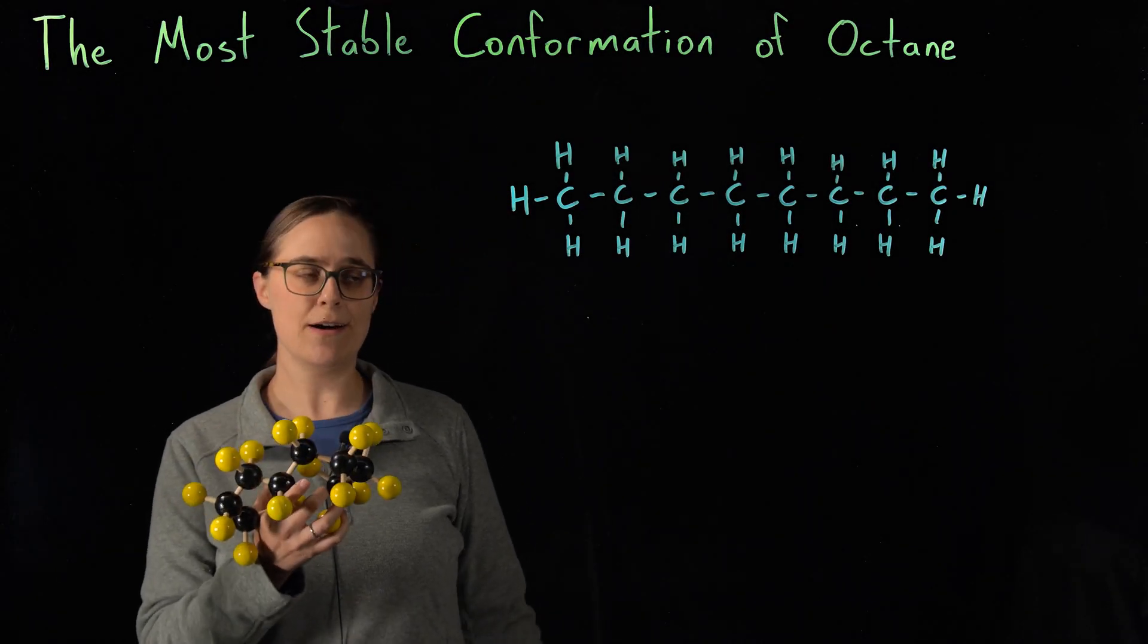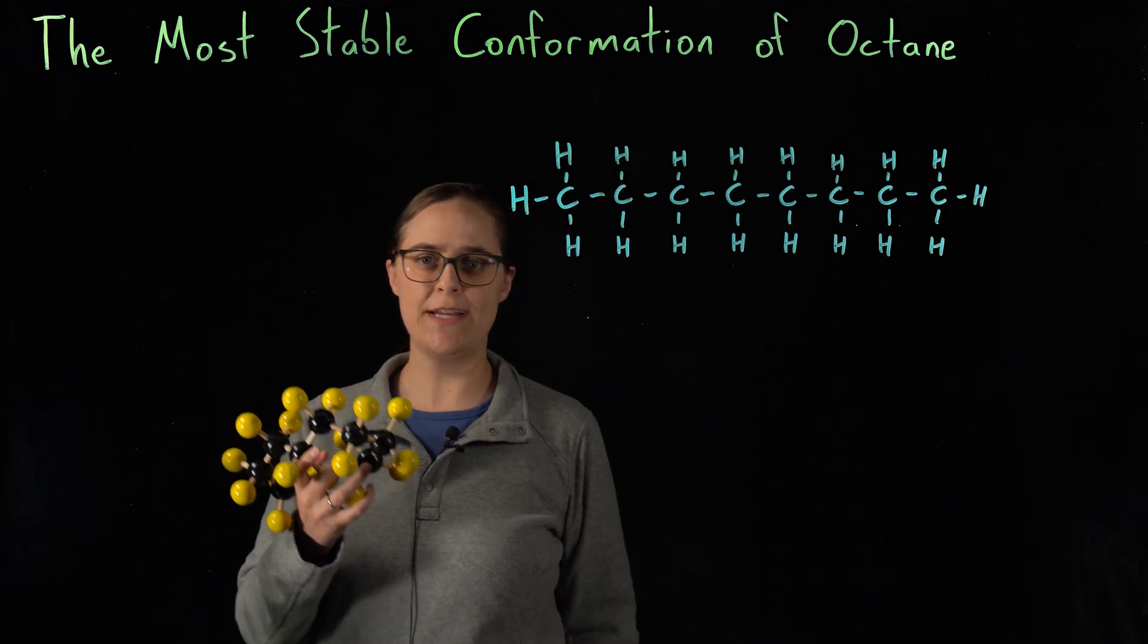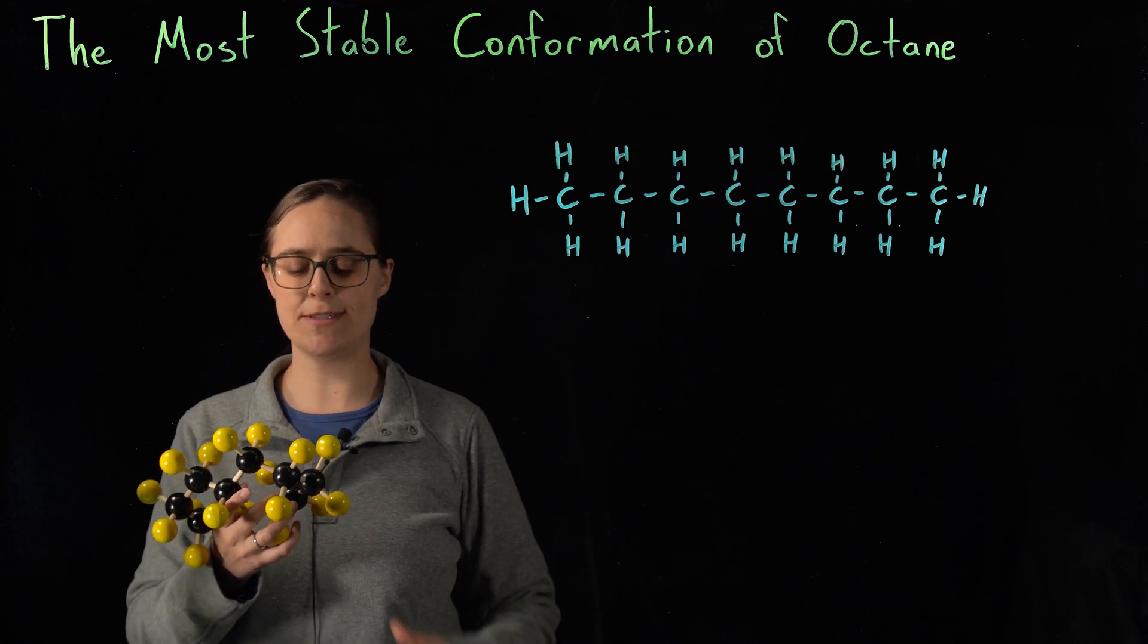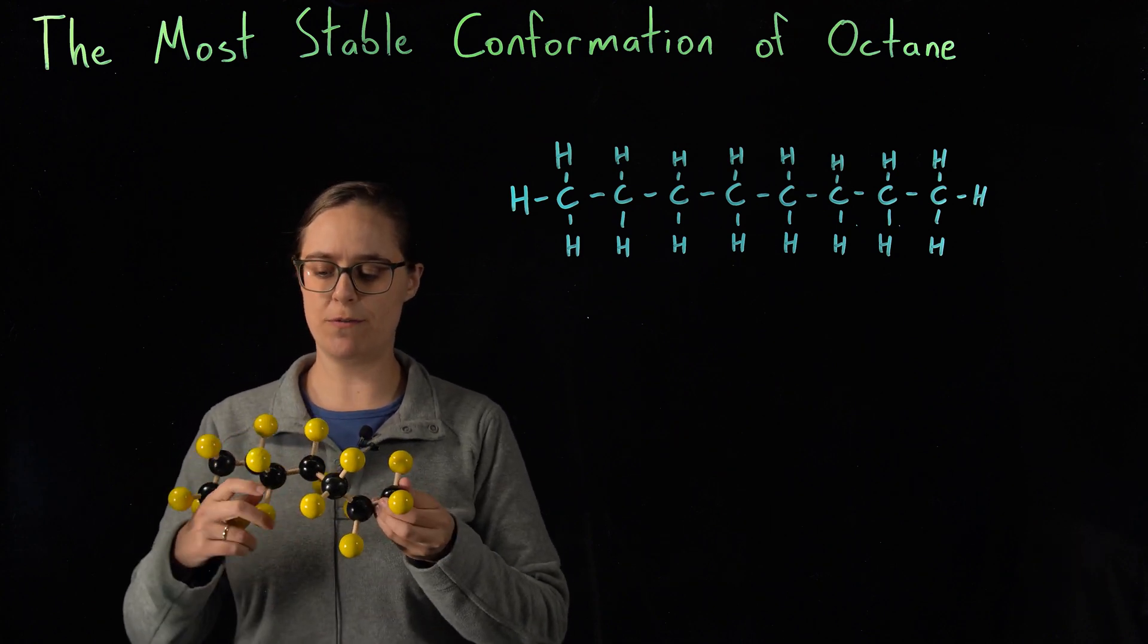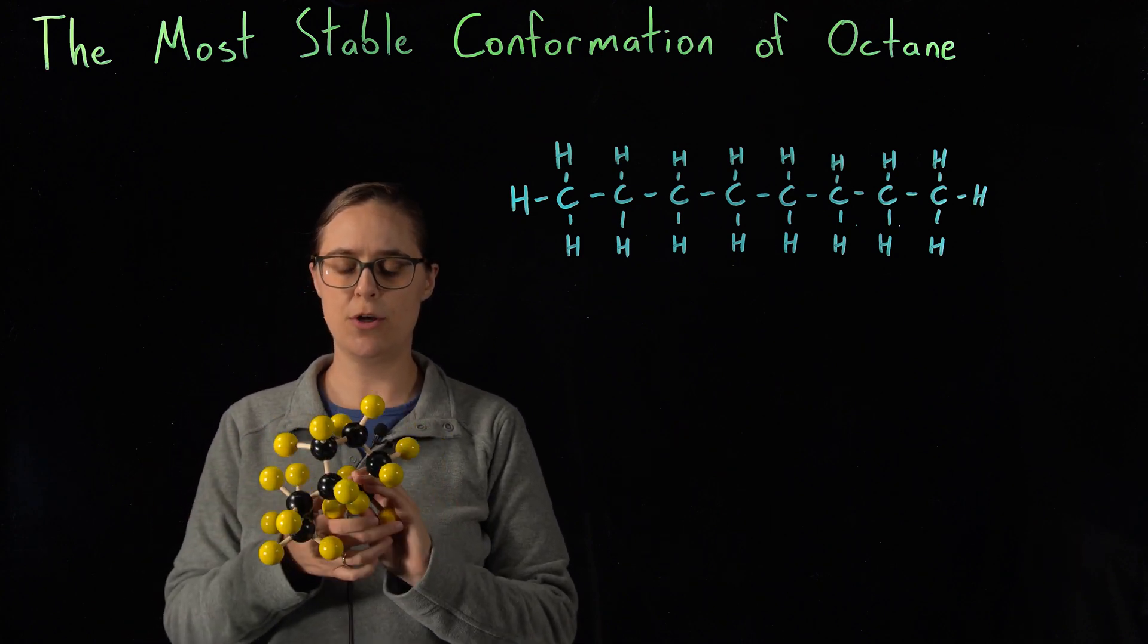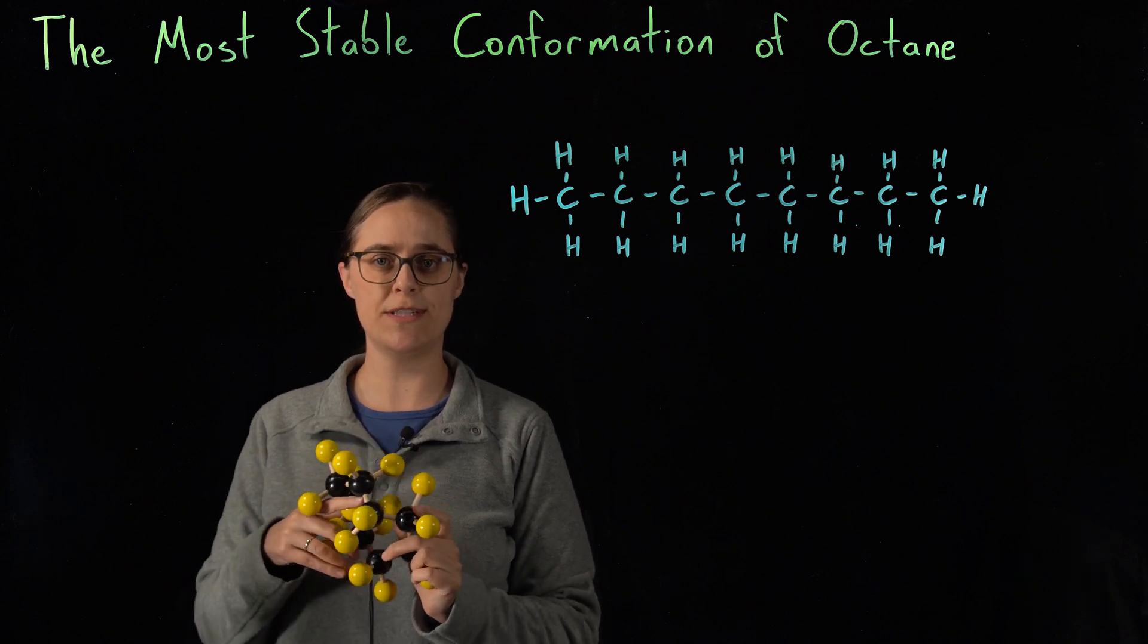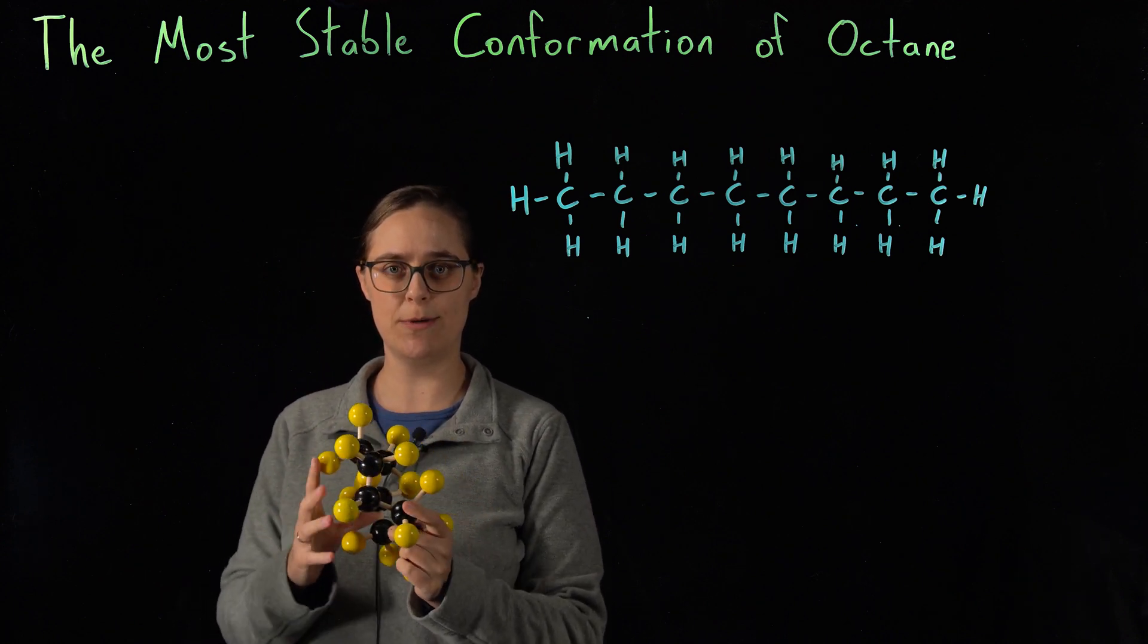I have a molecular model of octane. Octane has eight carbons in a chain and a total of 18 hydrogens. I'm going to go through each and every one of these carbon-carbon bonds in the model and rotate them to put them in their most stable conformation just so we can see what the molecule looks like.